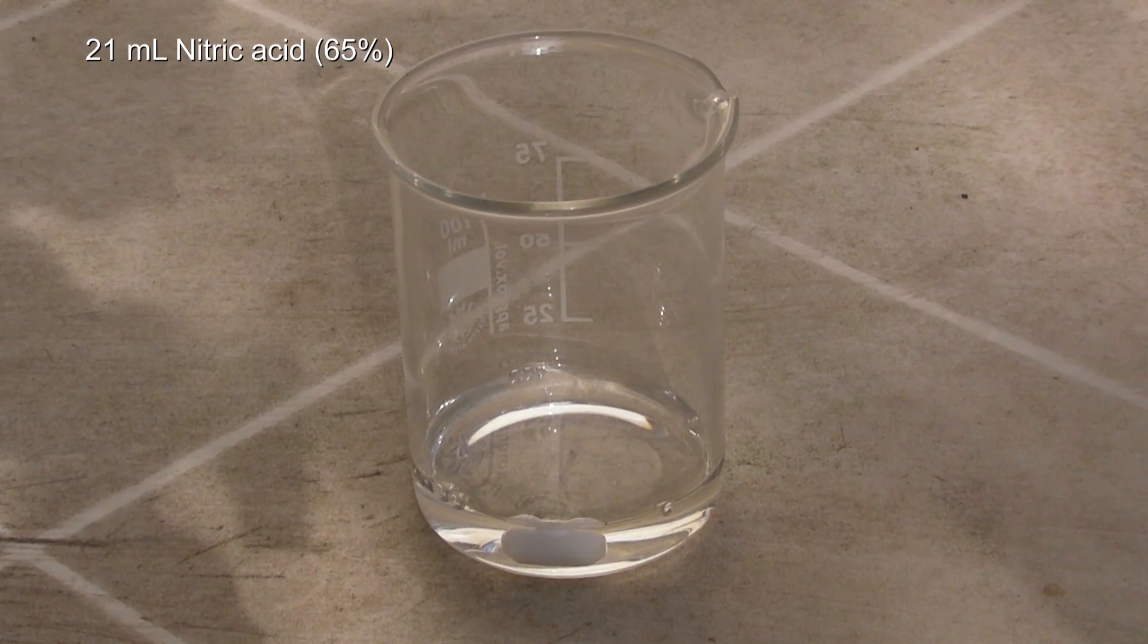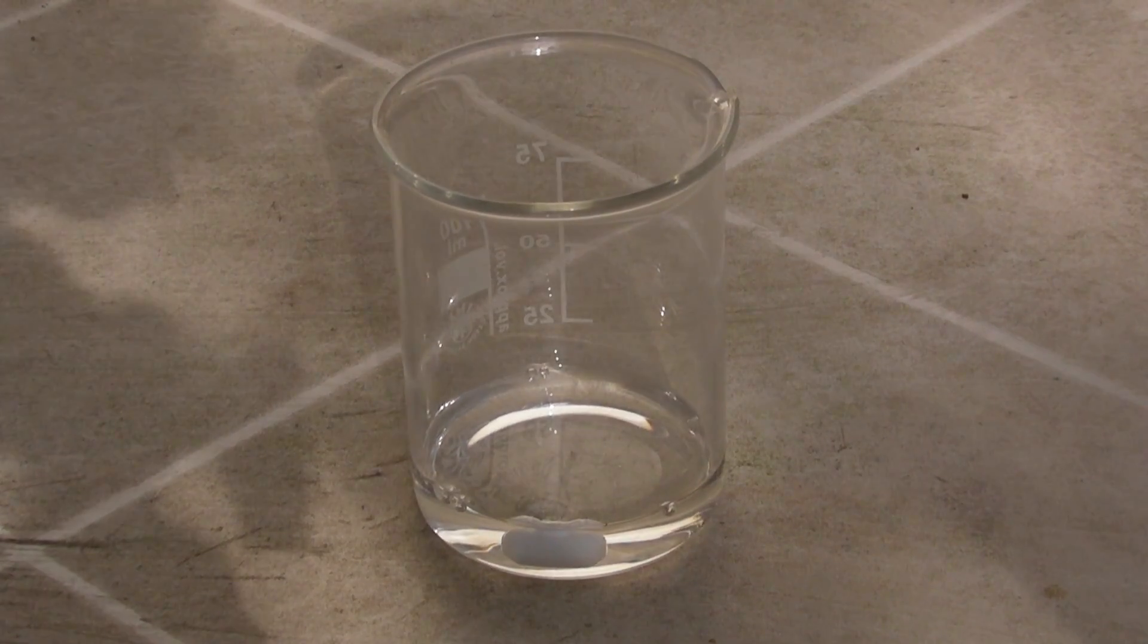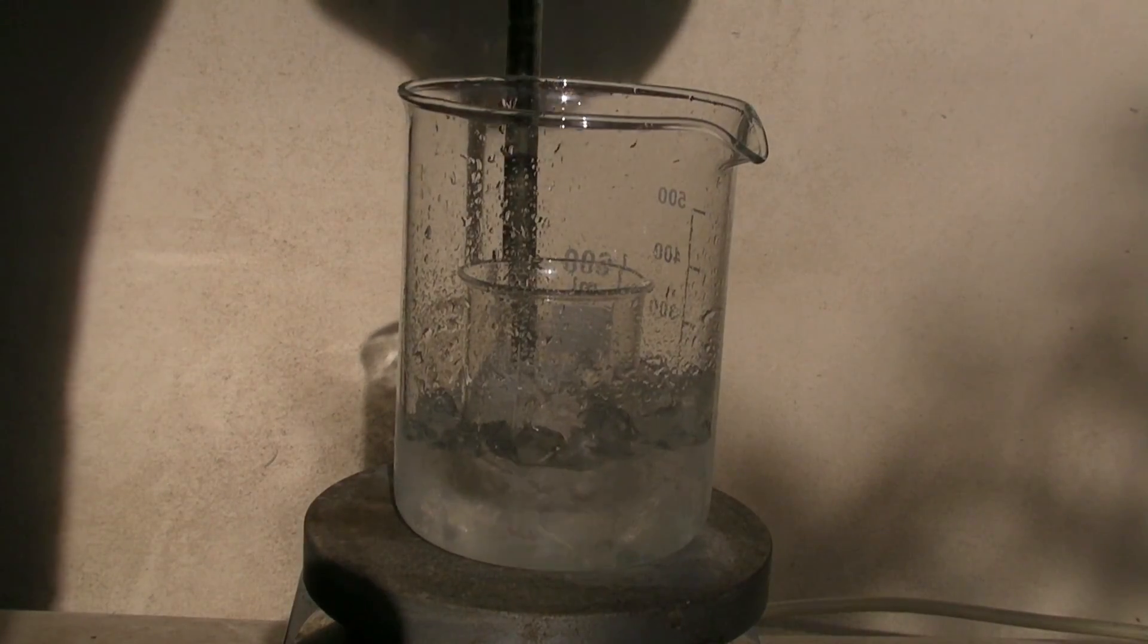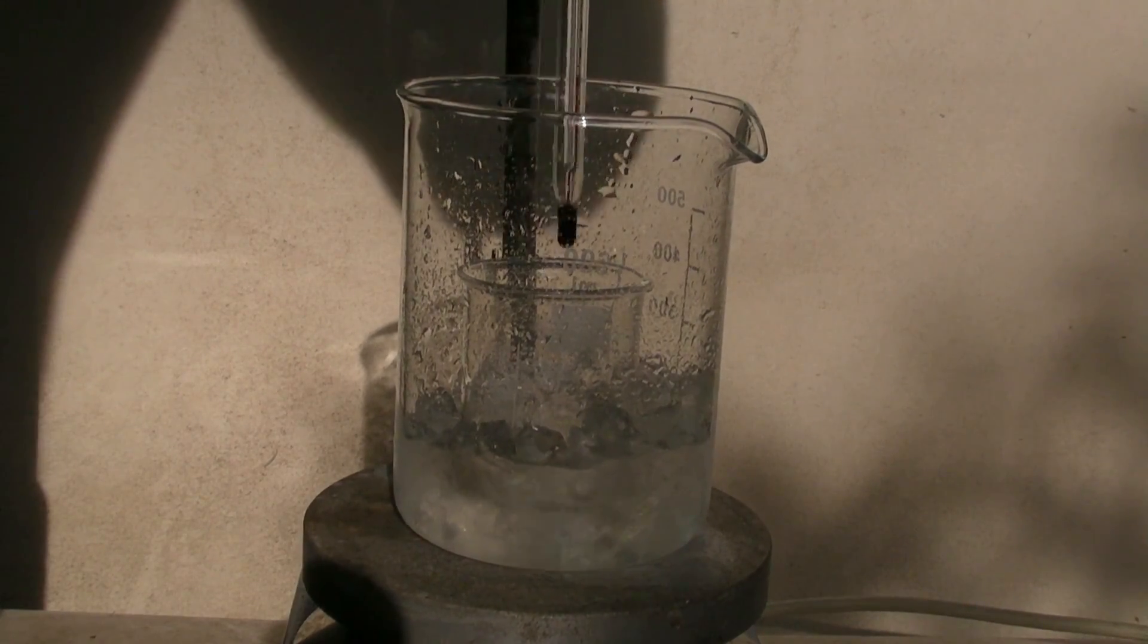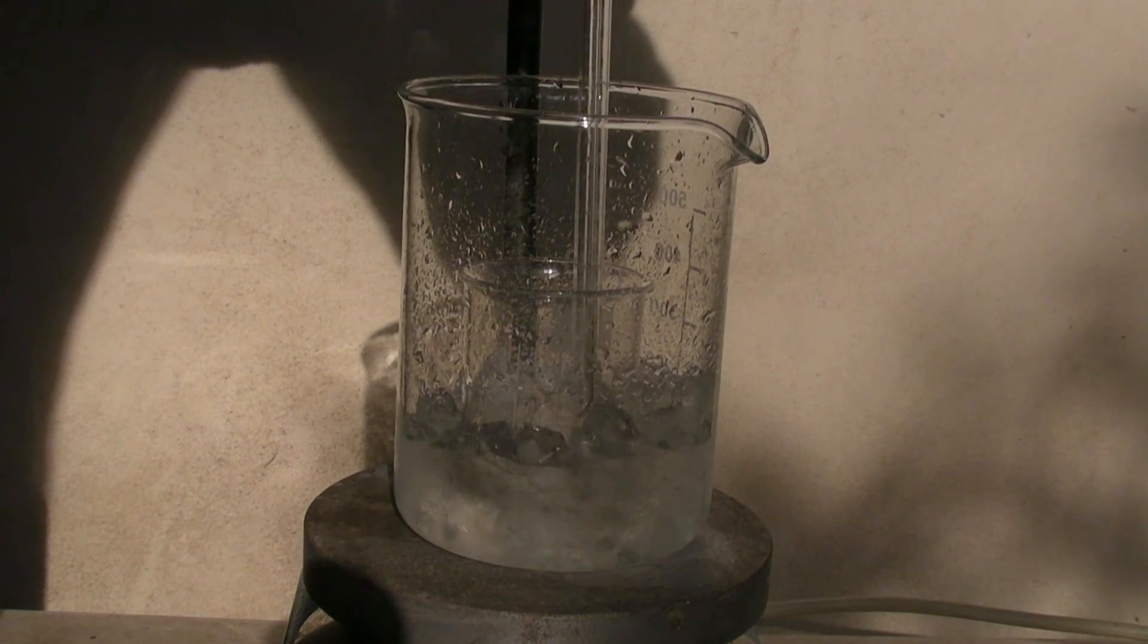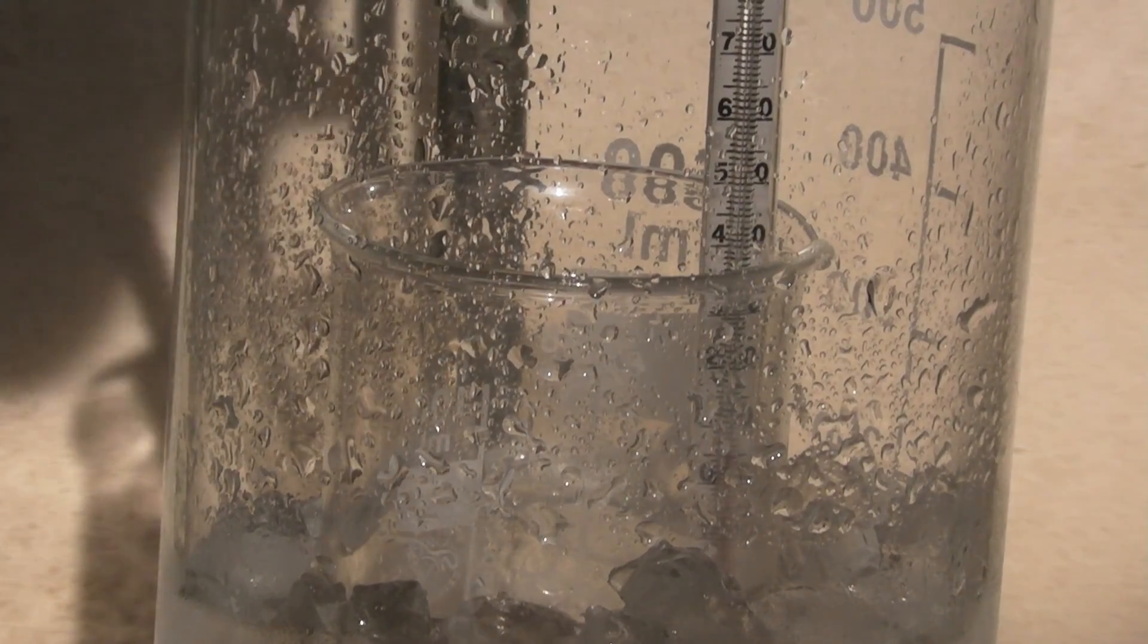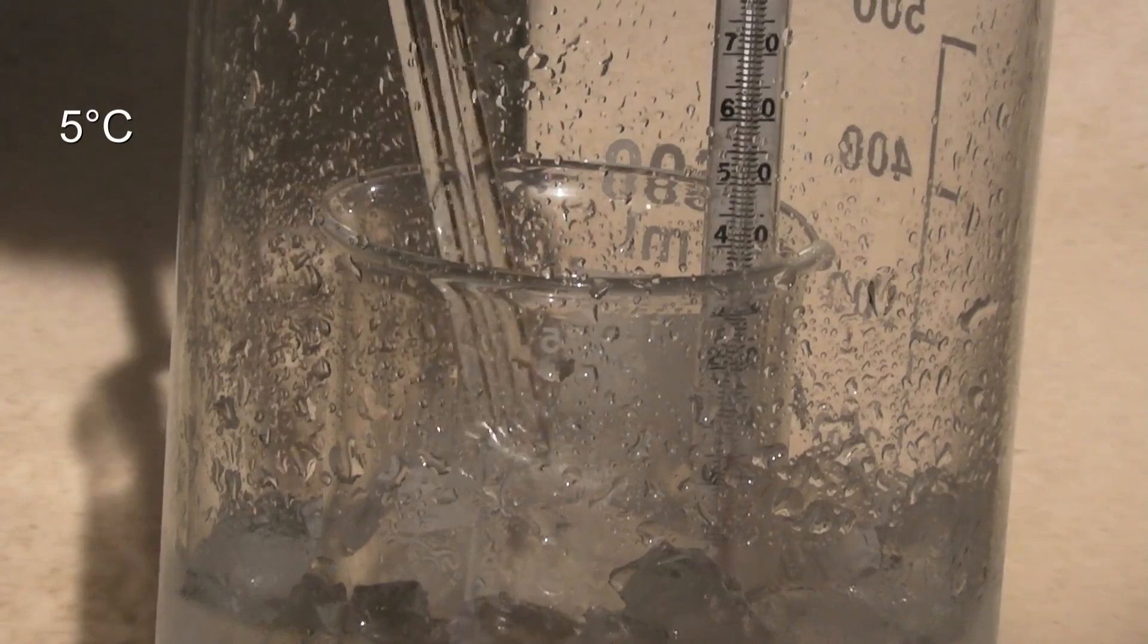Later, the stirring bar will turn out to be too small. The beaker was put into the ice bath and the thermometer was placed in the nitric acid. When the nitric acid had reached 5 degrees C,